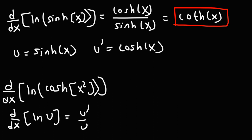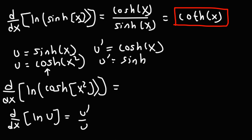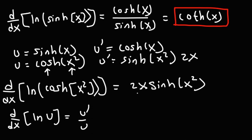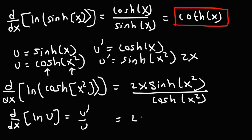For the derivative of ln(hyperbolic cosine of x²), u = cosh(x²). The derivative u prime: the derivative of cosh is sinh, keep the inside the same, then multiply by the derivative of the inside, which is 2x. So u prime = 2x sinh(x²). Dividing by u gives 2x sinh(x²) / cosh(x²). Since sine over cosine is tangent, the final answer is 2x times hyperbolic tangent of x squared.